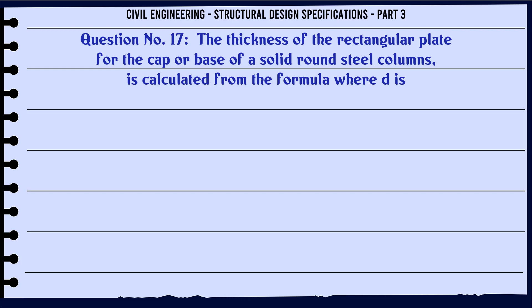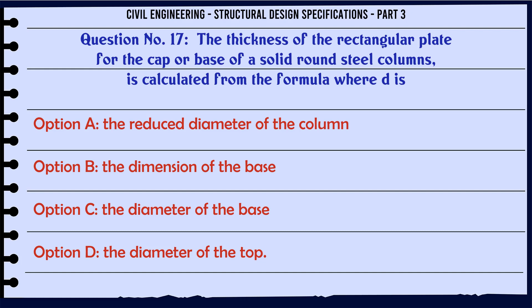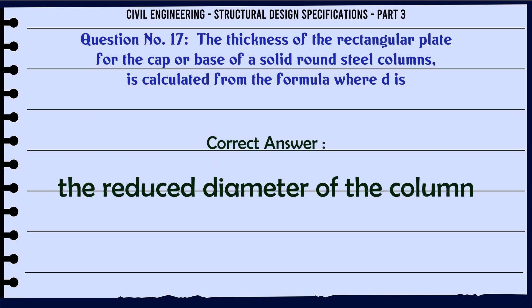The thickness of the rectangular plate for the cap or base of a solid round steel column is calculated from the formula where D is: a. The reduced diameter of the column, b. The dimension of the base, c. The diameter of the base, d. The diameter of the top. The correct answer is: the reduced diameter of the column.